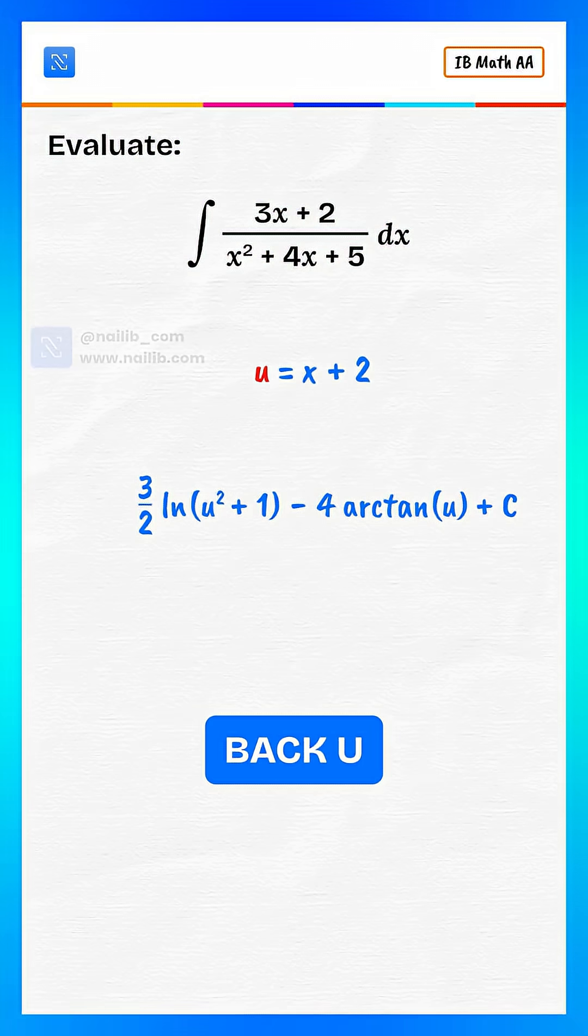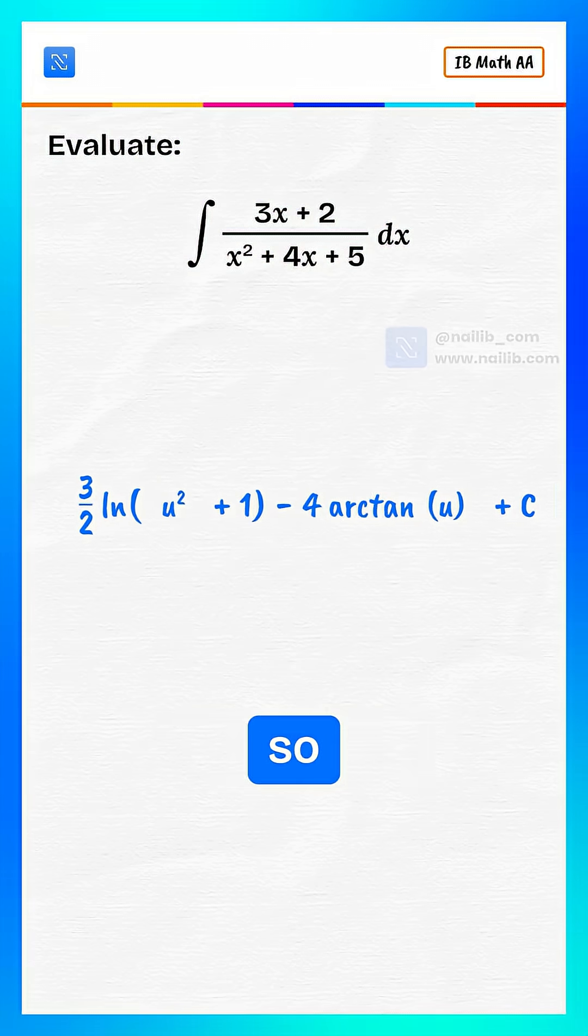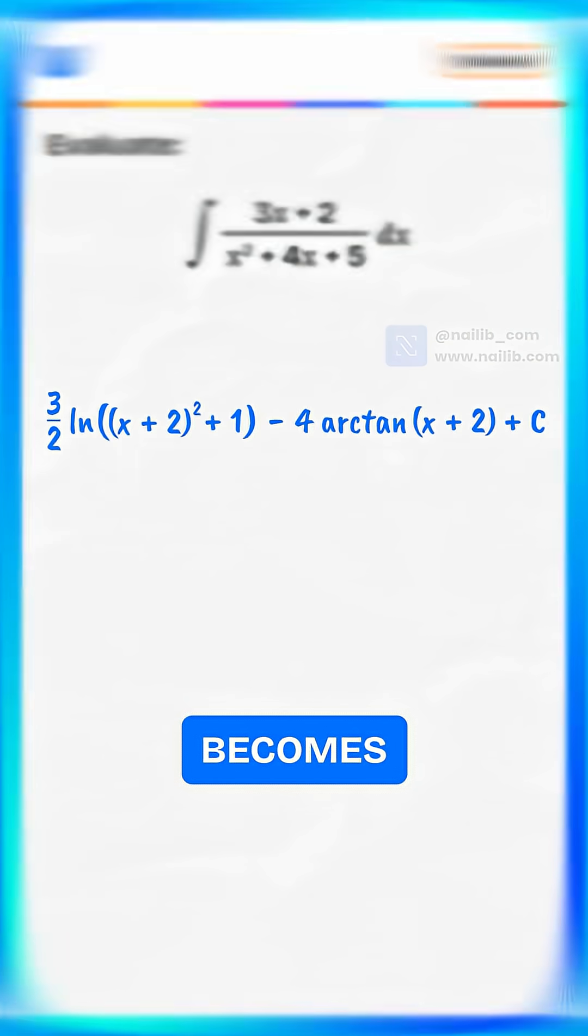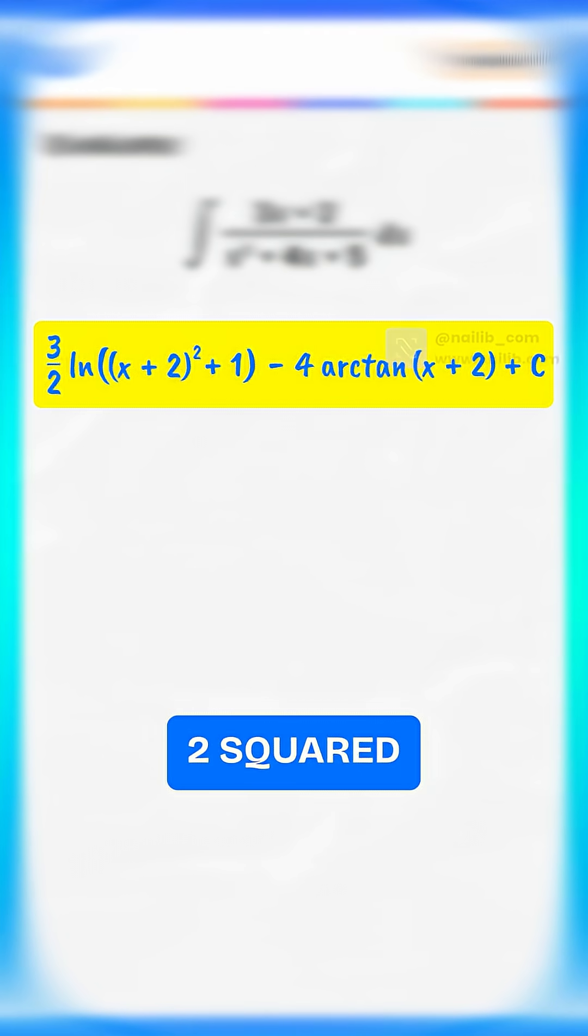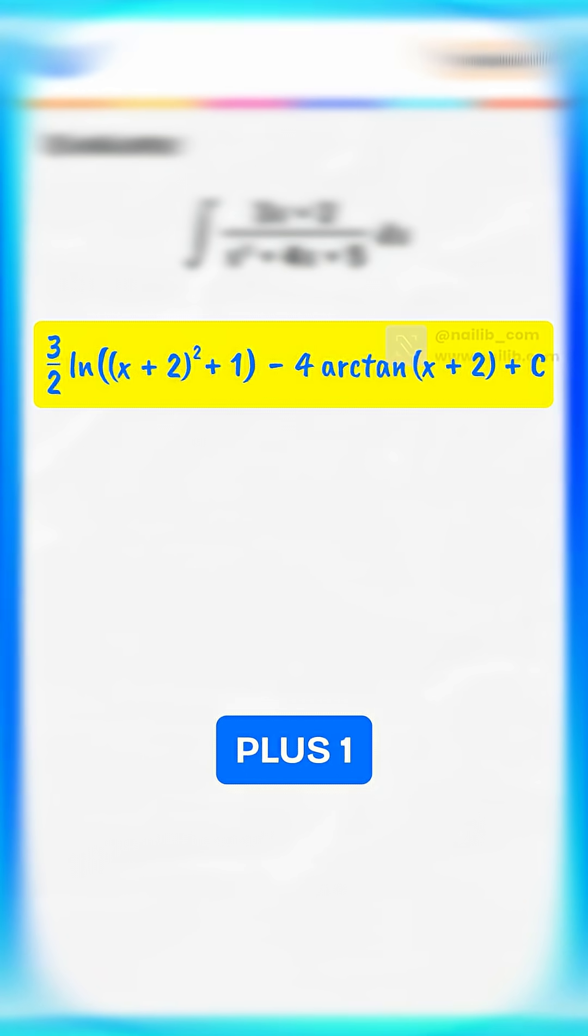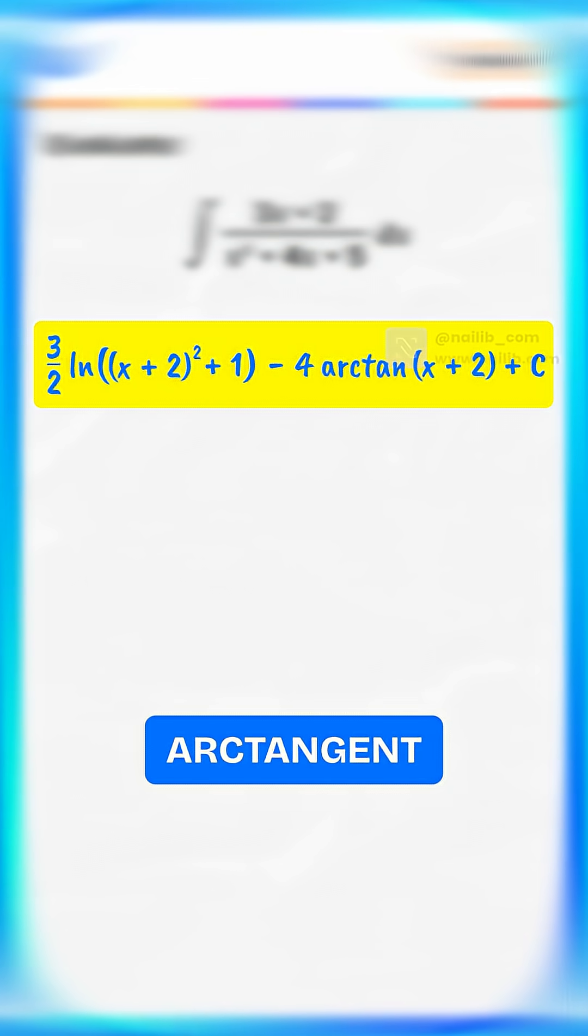Now substitute back u equals x plus 2. So the final answer becomes 3 divided by 2 times log of x plus 2 squared plus 1 minus 4 times arctangent of x plus 2 plus constant c.